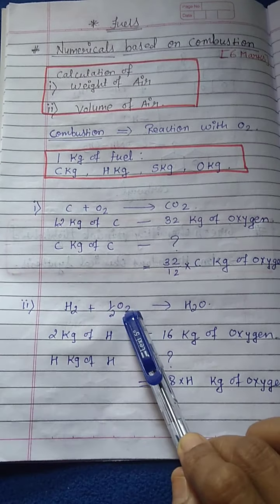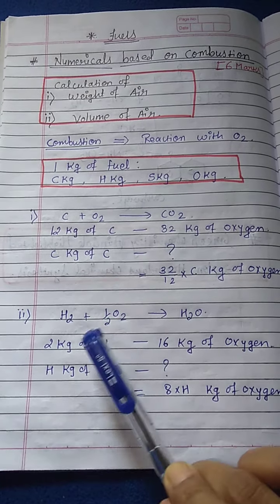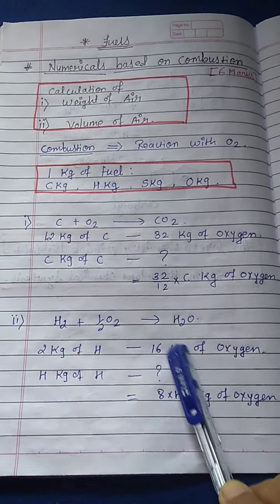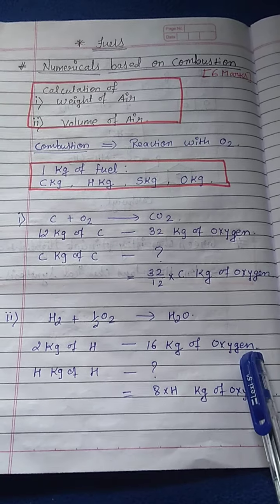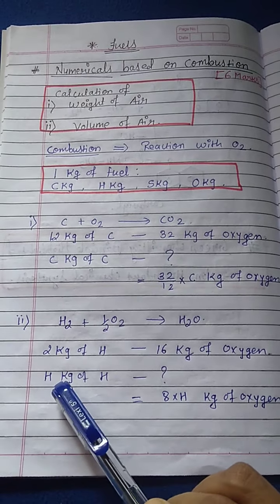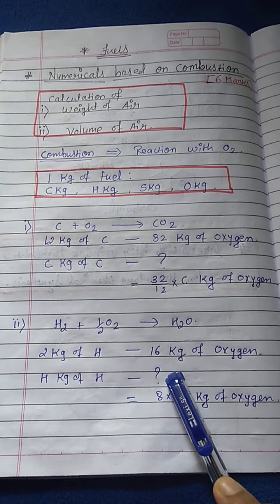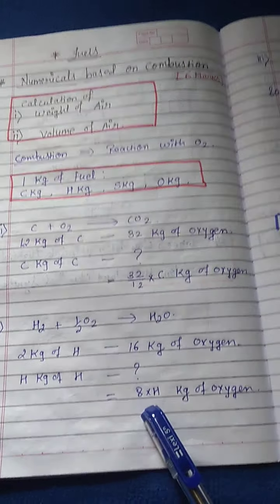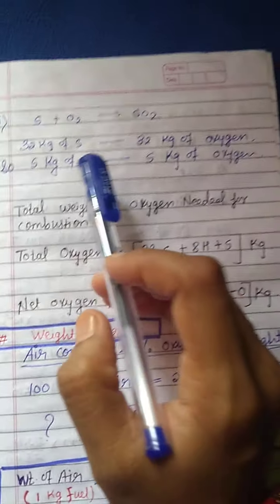The next element is hydrogen. The combustion reaction is: H₂ + ½O₂ → H₂O. From this reaction, 2 kg of hydrogen (H₂) reacts with ½ O₂, which is 16 kg of oxygen. The fuel contains H kg of hydrogen, so by cross-multiplying we get 8H kg of oxygen needed for combustion of hydrogen.